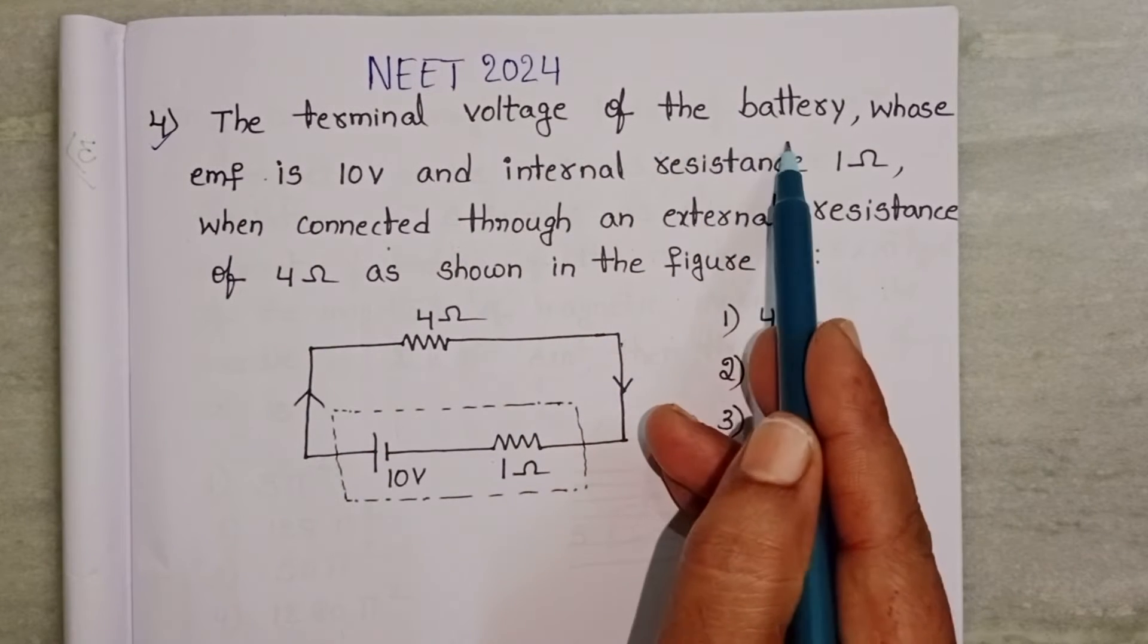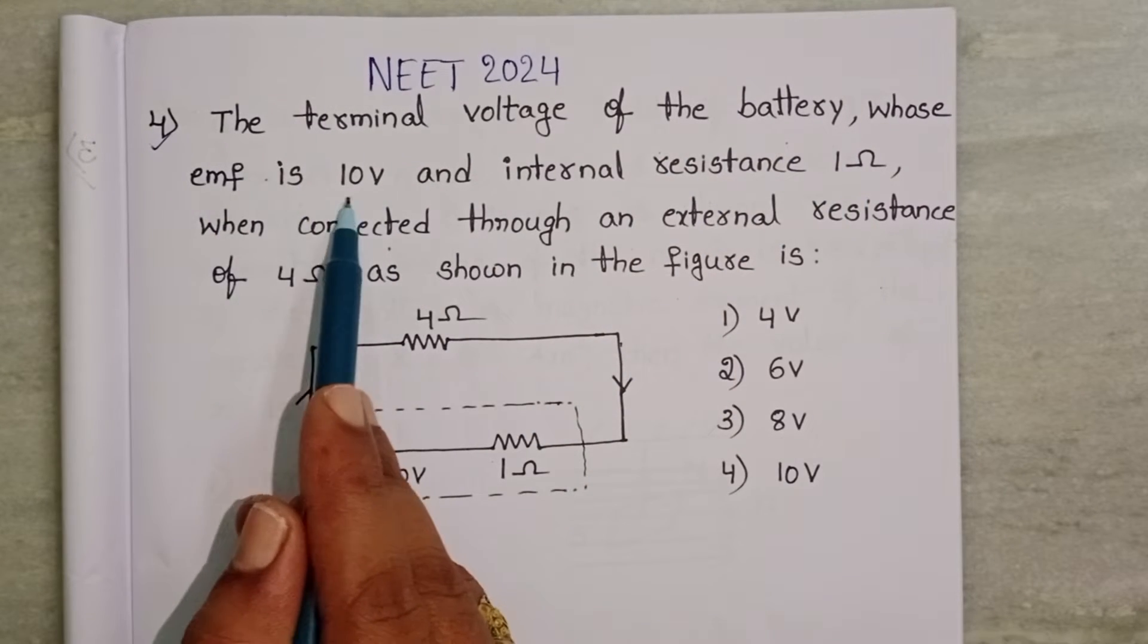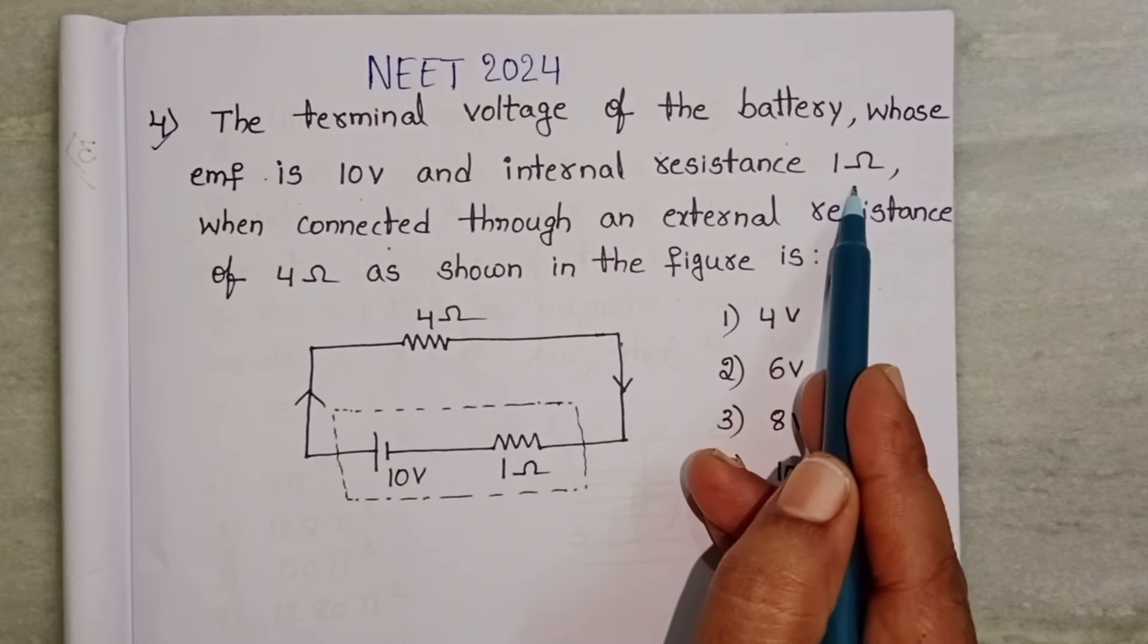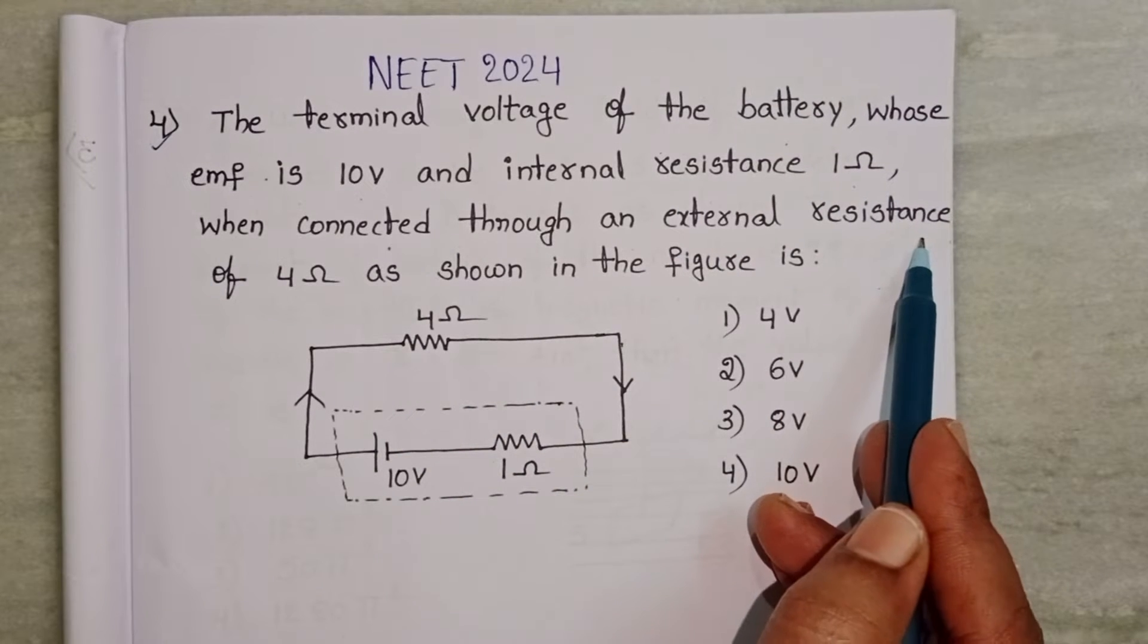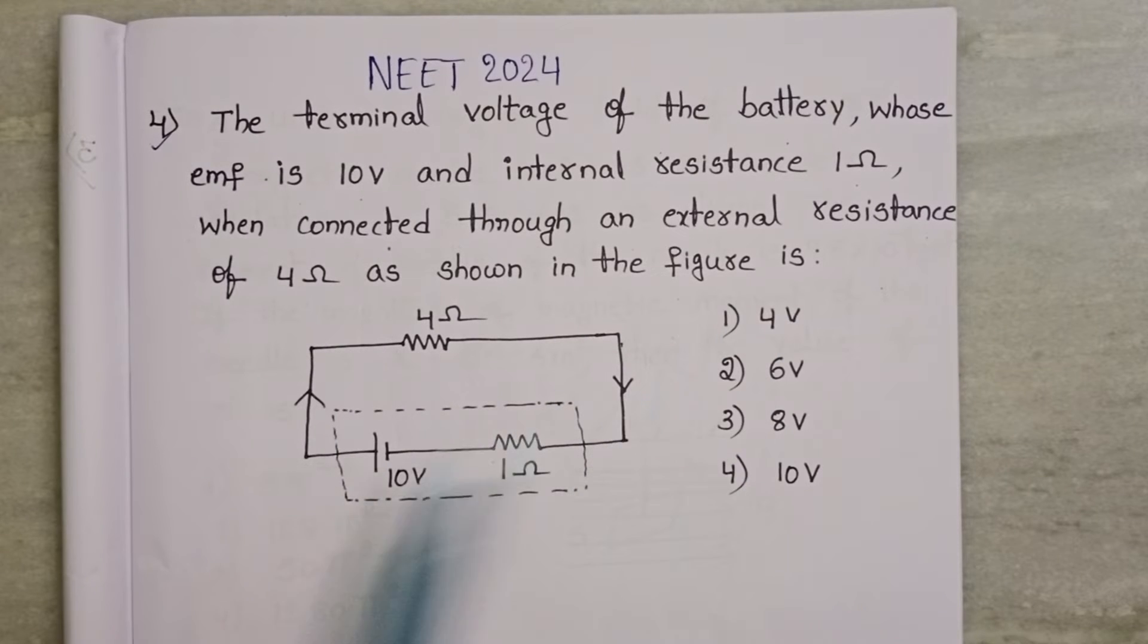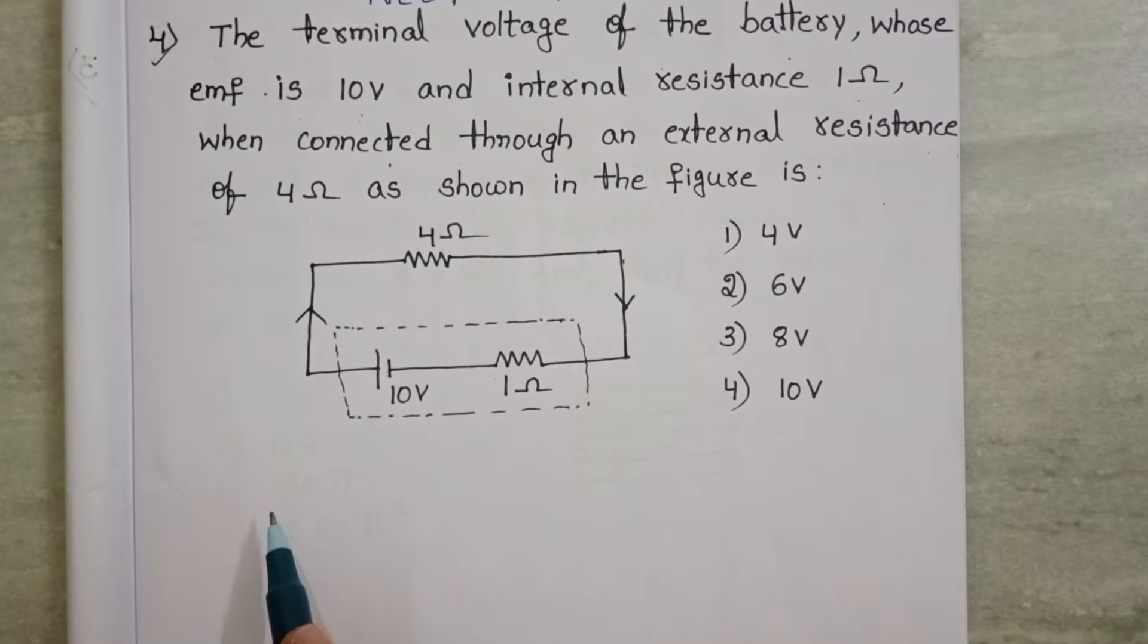The terminal voltage of the battery whose EMF is 10V and internal resistance is 1Ω when connected through an external resistance of 4Ω as shown in the figure. This is the given diagram.